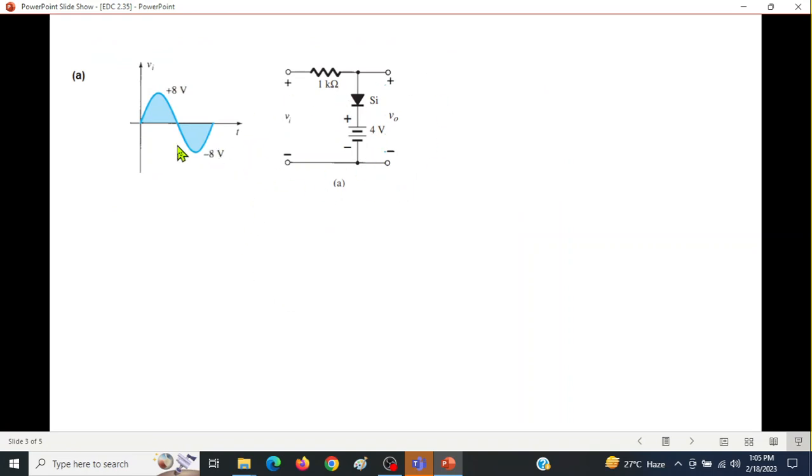This is the circuit. We apply the positive half cycle first. When we apply positive half cycle, this becomes positive, this negative. The positive of the battery is touching the positive of the diode, therefore the diode will become forward biased and so we replace the diode by a 0.7 volt battery.